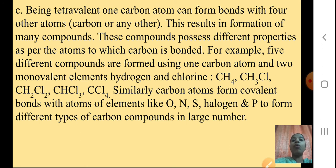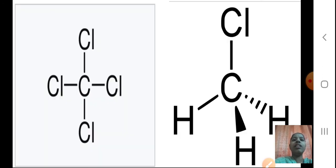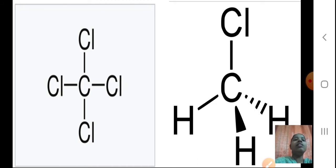Similarly, Carbon atoms form covalent bonds with atoms of elements like Oxygen, Nitrogen, Sulphur, Halogen, and Phosphorus to form different types of Carbon compounds in large numbers. You can see in the diagram how Carbon is bonded to 4 Chlorine atoms to form CCl4 — four covalent bonds are formed with the 4 Chlorine atoms. The next structural diagram shows CH3Cl, where the molecular formula is CH3Cl. I hope both structure diagrams are clear to you.